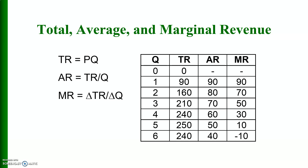Total revenue equals the quantity of output produced multiplied by its price — that is the value of output sold. Average revenue means total revenue divided by units of output sold (Q). Marginal revenue is the derivative of total revenue with respect to Q, expressed as δTR/δQ. This table shows: the first column — units of output; the second column — total revenue; the third column — average revenue; and the last column — marginal revenue.